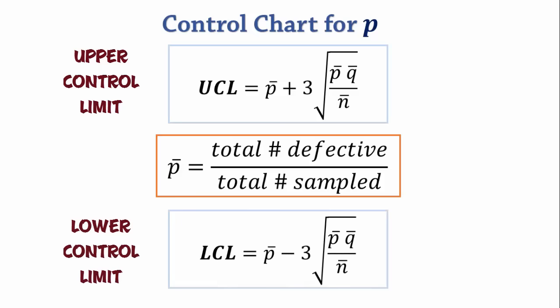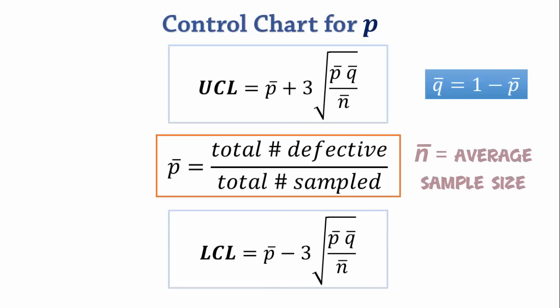q-bar is 1 minus p-bar, that is proportion of non-defective items, and n-bar is the average of the sample sizes.